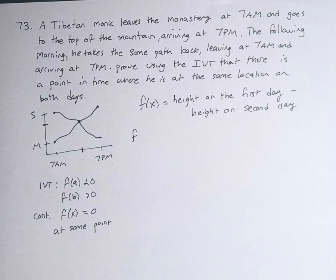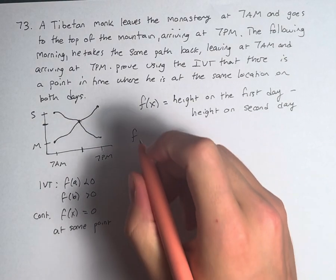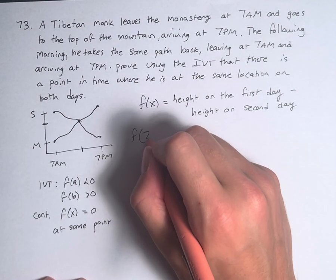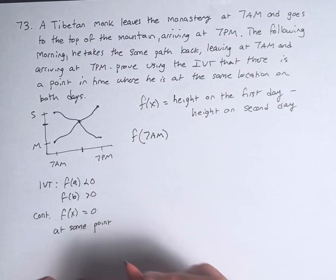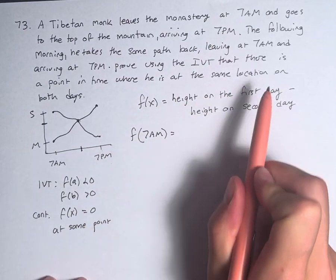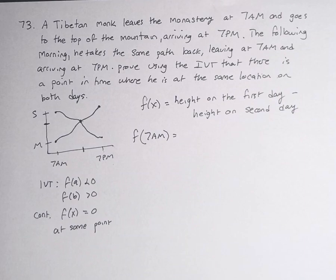So using this function, which isn't really a mathematical function in the way we usually use it, but is more of a verbal function, what is f(7 a.m.)? Well, that's the height on the first day, or the location or distance traveled. But I'm just going to use height because we're going up a mountain, so we can mark it in height.